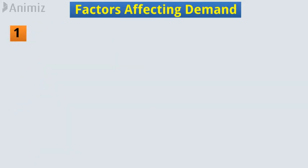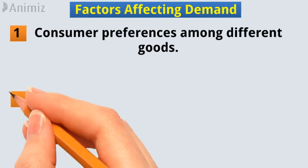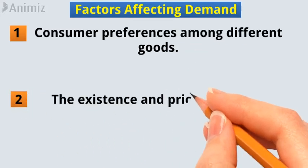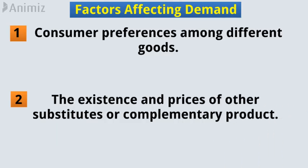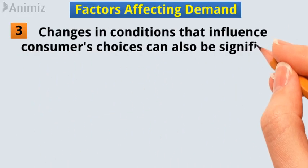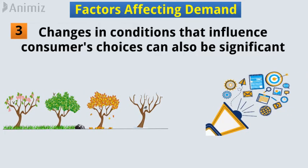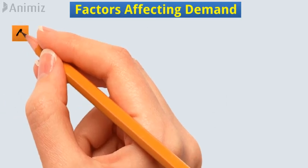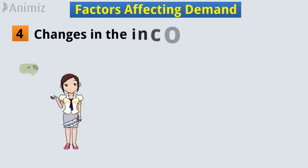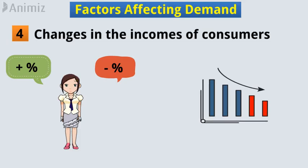Factors Affecting Demand: 1. Consumer preferences among different goods. 2. The existence and prices of other substitutes or complementary products can change demand. 3. Changes in conditions that influence consumers' choices can also be significant, such as seasonal changes or the effects of advertising. 4. Changes in the incomes of consumers can also be important in either increasing or decreasing the quantity of demand.